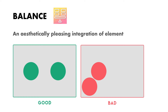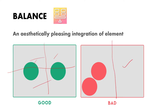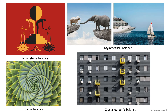The first principle is balance. Balance is the aesthetically pleasing integration of elements — this can be shapes, colors, values, or use of positive and negative spaces. In simple terms, both sides of a composition should have the same visual weight. For example, if left and right have the same weight, or if cut diagonally they have the same weight, that is a good composition. If the sides do not have equal visual weight, it is a bad composition in terms of balance.